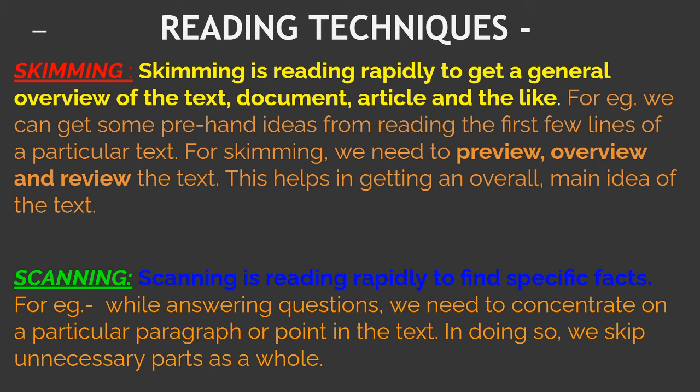Skimming is reading rapidly to get a general overview of the text, document, article, and the like. For example, we can get some freehand ideas from reading the first few lines of a particular text. For skimming, we need to preview, overview, and review the text. This helps in getting an overall main idea of the text. Simply put, skimming means getting the main subject or theme of the text from an overall reading overview.